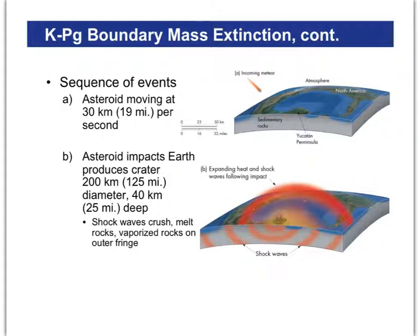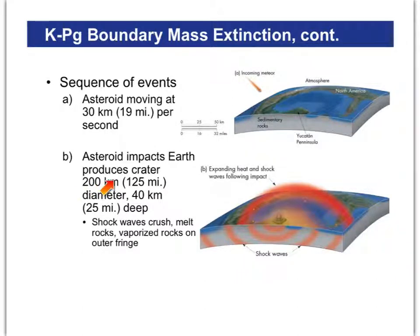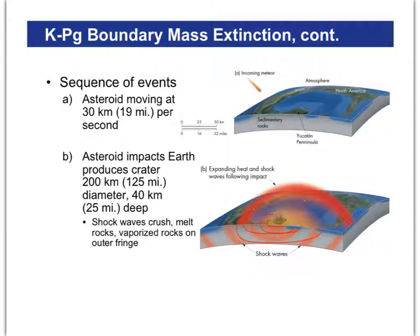These next slides take you step by step through what we think actually happened in this Cretaceous-Paleogene mass extinction 65 million years ago. A large asteroid moving about 30 kilometers per second slams into what is now the Yucatan Peninsula, creating a crater maybe as wide as 200 kilometers in diameter and 40 kilometers — 25 miles — deep. The shock waves, not so much the object itself but the kinetic energy, do a lot of damage to the surrounding rocks — crushing them, melting them, vaporizing them — with an expanding shock wave going out in all directions.